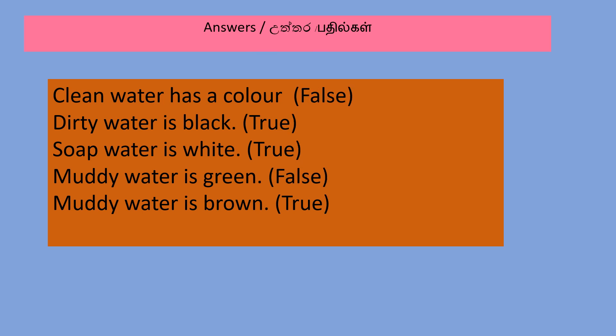Answers. Clean water has a color — False. Dirty water is black — True. Soap water is white — True. Muddy water is green — False. Muddy water is brown — True.